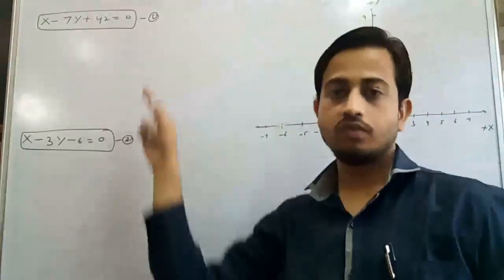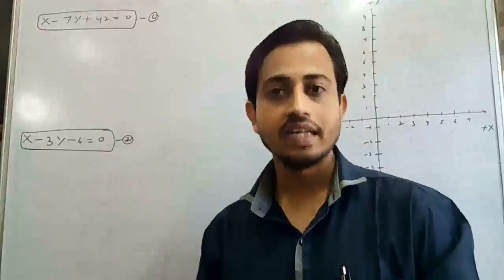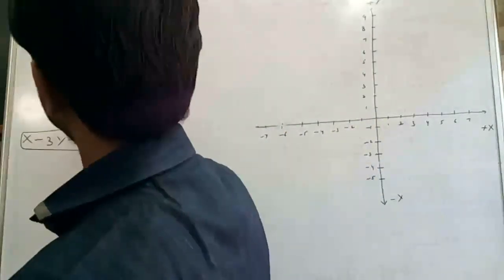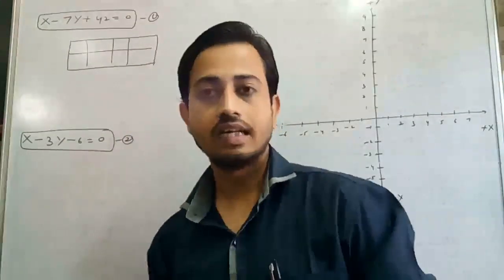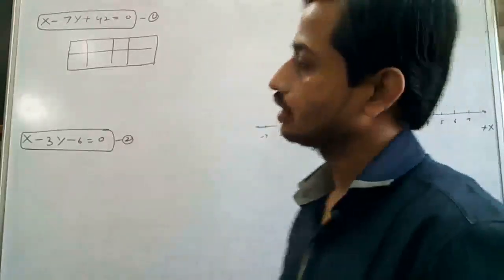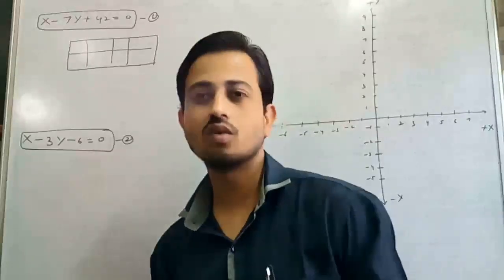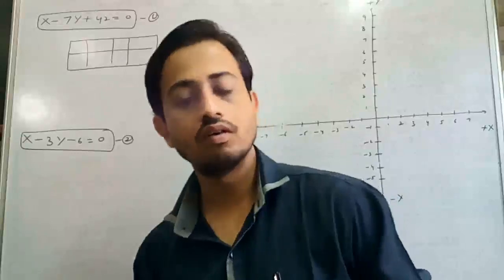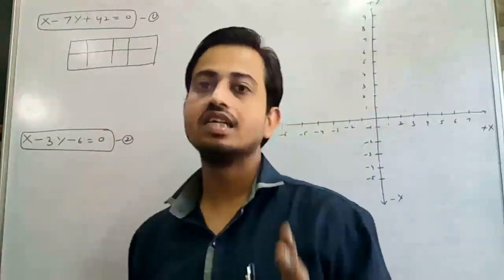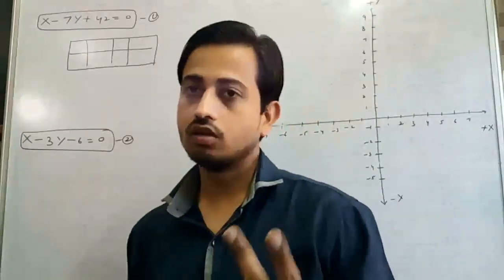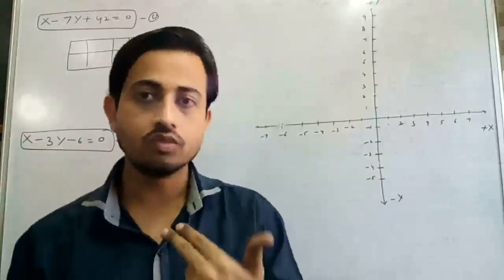Now we have to represent both equations in graphical form. We have to create a table first. To plot a straight line we need only two points, because by joining two points we can draw a straight line — no more than two points are needed. For simplicity, the first point is found by putting x equals 0, and the second point by putting y equals 0. If those values are complex or difficult to plot, we can choose other values.